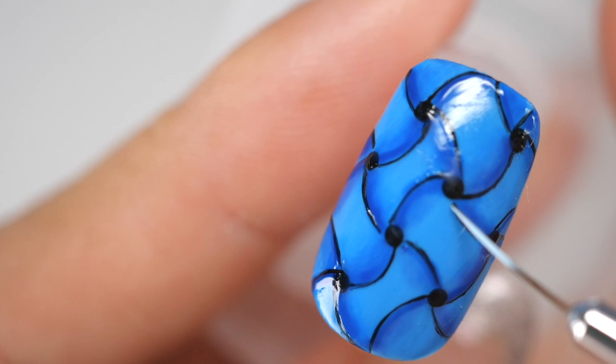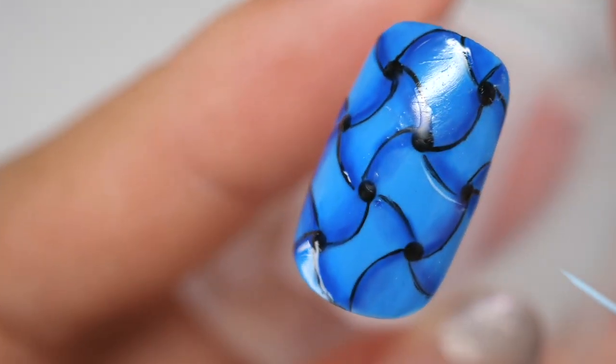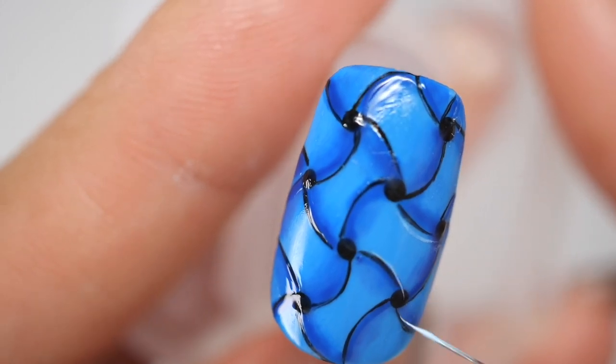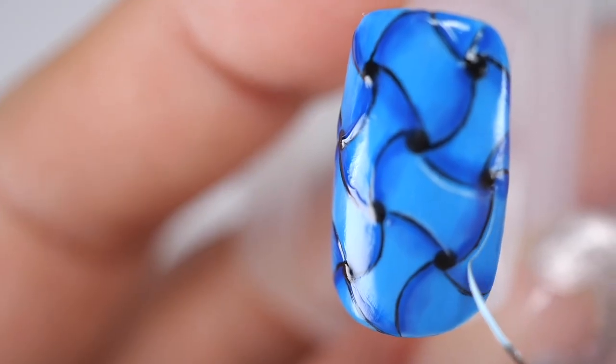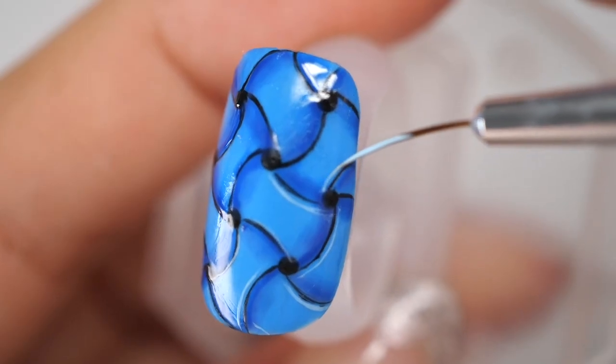Next, using the mixed whitish light blue, draw a thin line of light on the upside of the curve. This line is as thin as a hair, but just by adding this line of light, it suddenly becomes more three-dimensional.